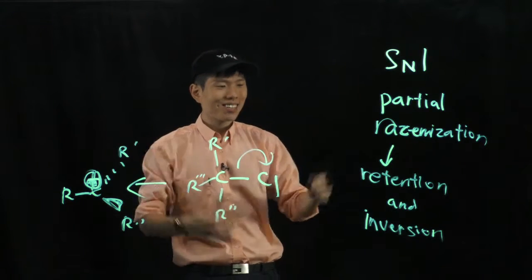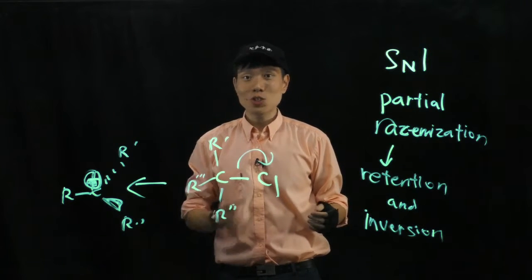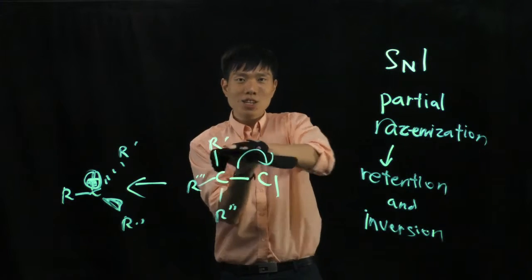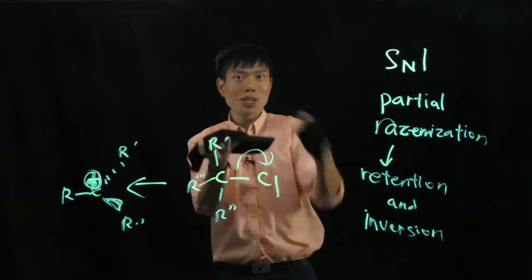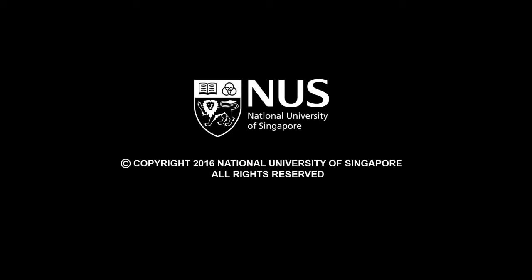So we call this partial racemization with a choice of retention and inversion. Just because the intermediate here is a carbocation, it is flat, you have got two possible ways of forming the bond here.